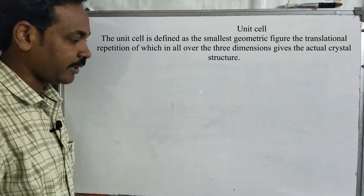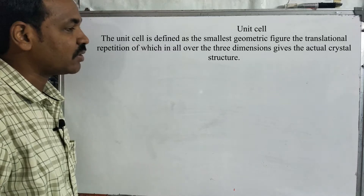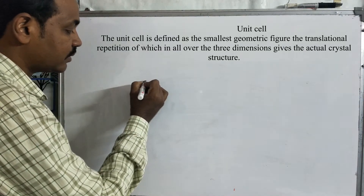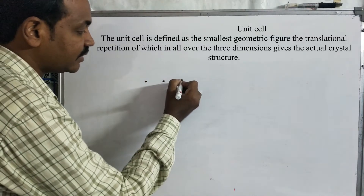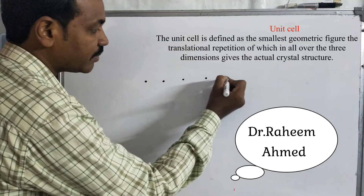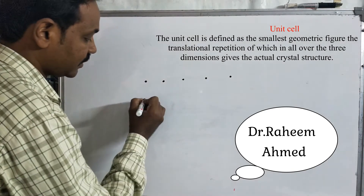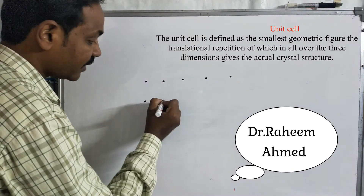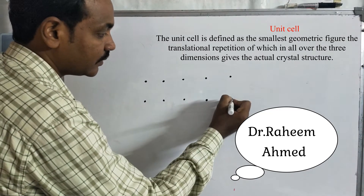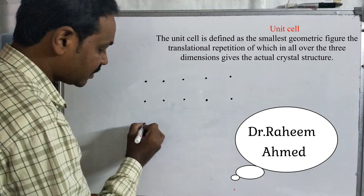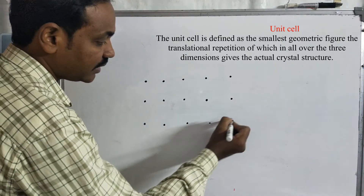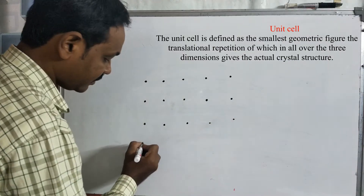In the crystal graph, I am going to talk about space lattice. Space lattice is the regular arrangement of lattice points. This is the regular three-dimensional arrangement. This is the three-dimensional arrangement. If you want to arrange the points, you will have a lattice. This is the basic lattice.